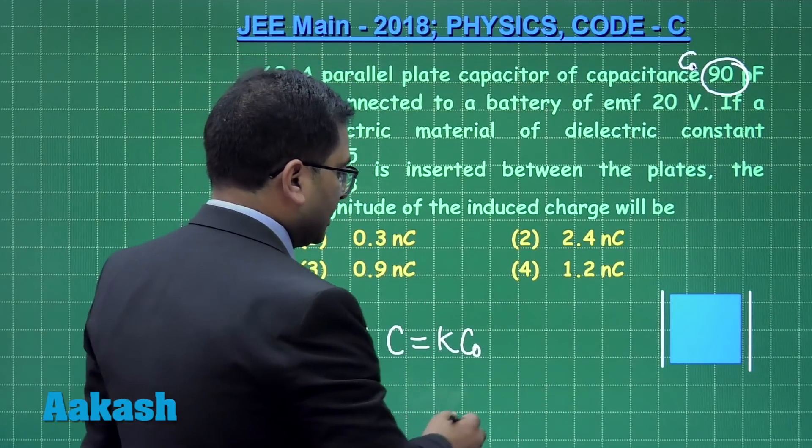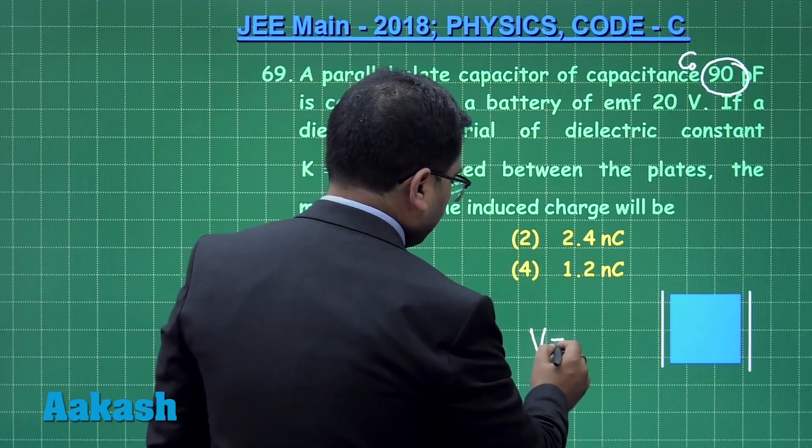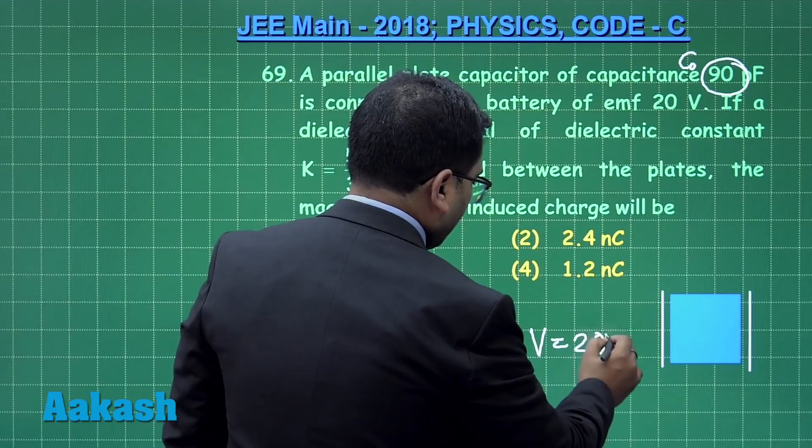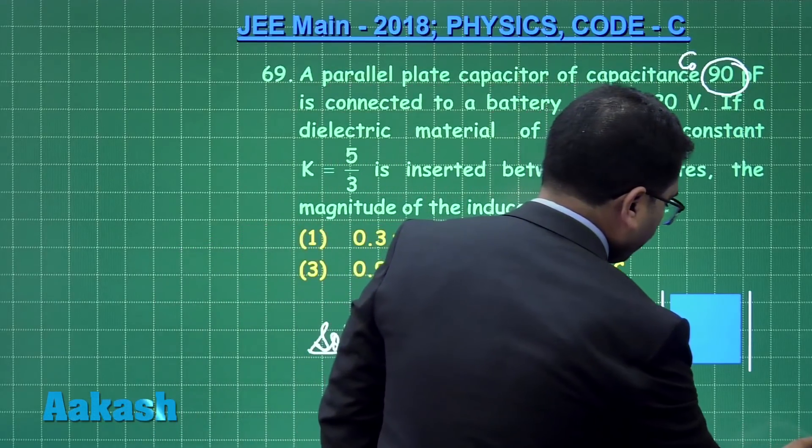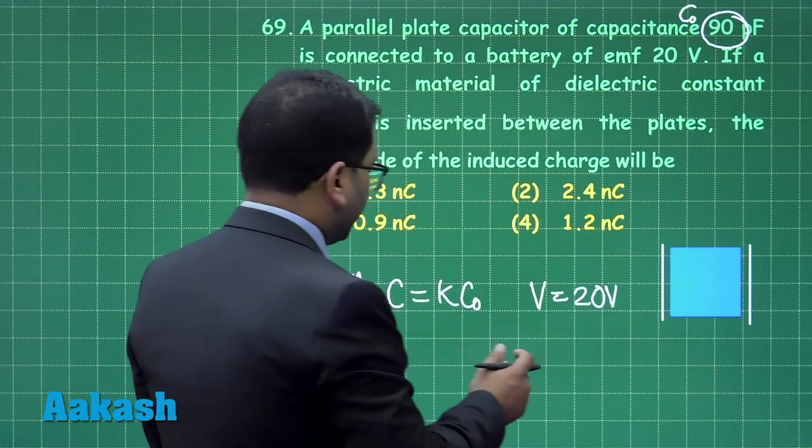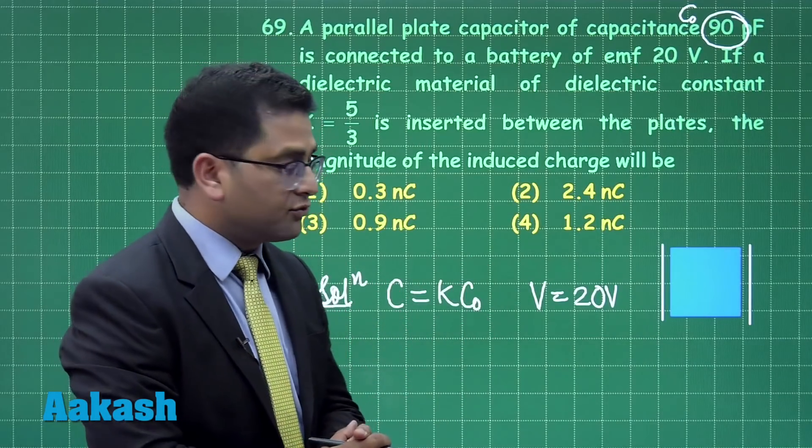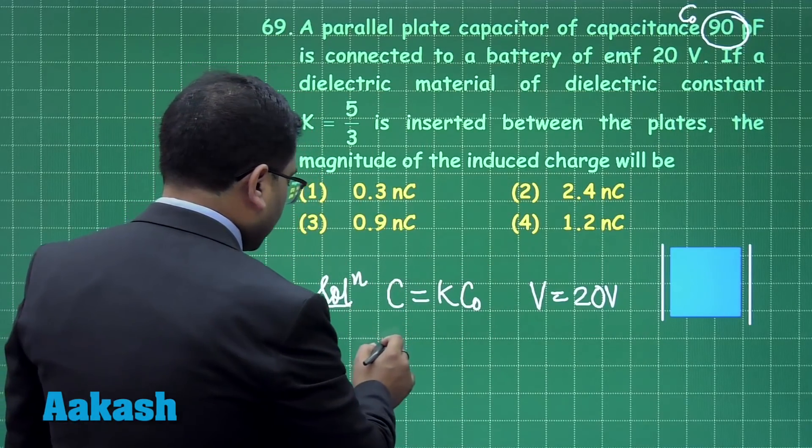The potential difference has been given, so V equals 20 volts. Now on the basis of these two values we need to calculate the induced charge appearing on the dielectric surface.